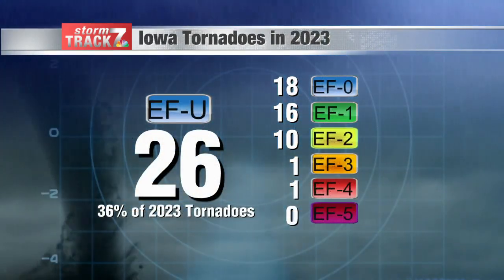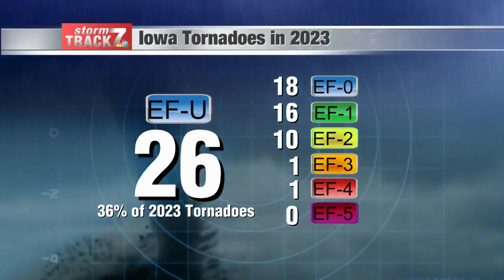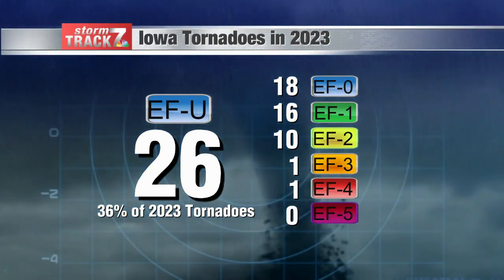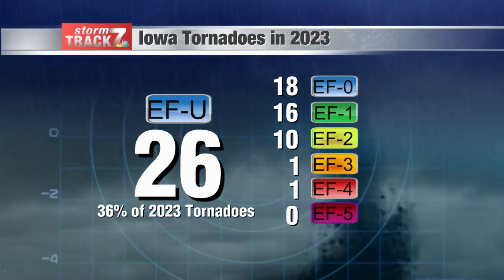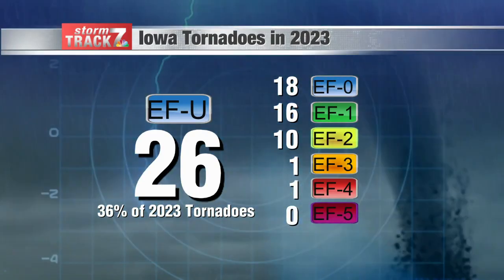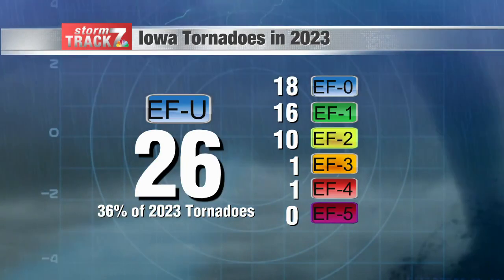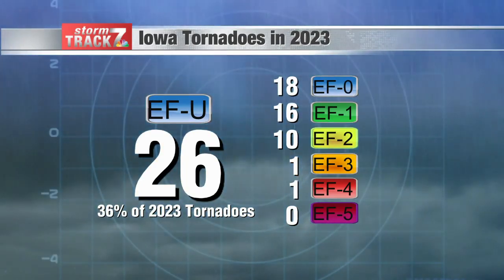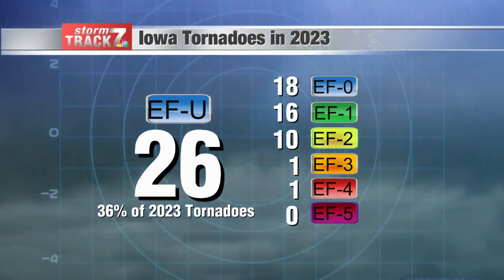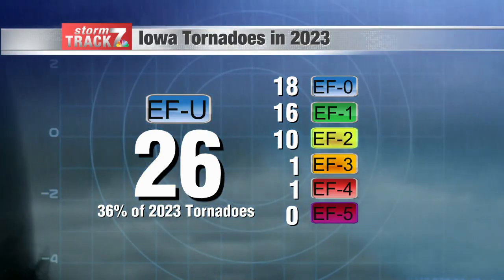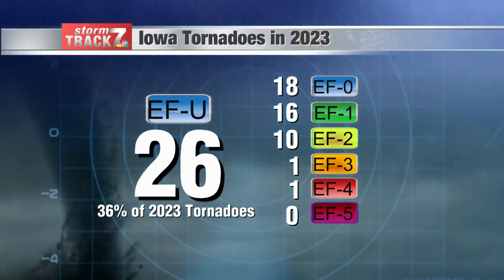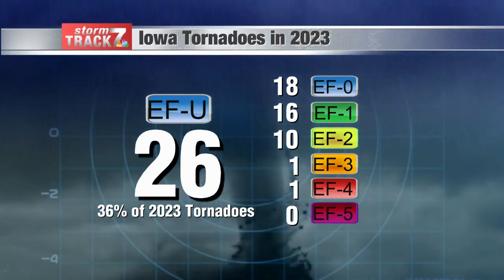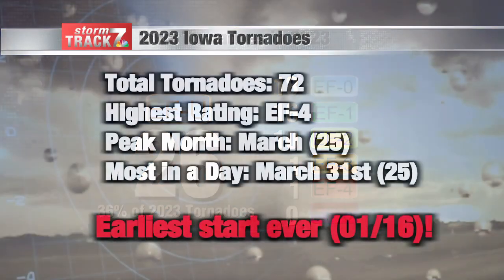Last year alone, no EF5s. We did have that one EF4 in Keokuk County during that March 31st outbreak. But most of our tornadoes were actually EF-unrated — 26 of them, about 36% of the total tornado count last year. 18 were EF0s and 16 were EF1s. Again, that just goes to show you that weaker tornadoes are more common, which is exactly what we saw last year.